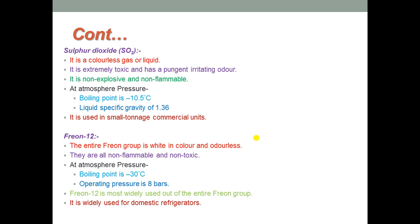Another type is Freon-22, designated R-22, with chemical formula CHClF₂ (Chlorodifluoromethane). It has similar properties to Freon-12 but a normal boiling point of around -40.8°C, making it a comparatively high pressure refrigerant. Freon-22 is employed in large capacity plants like packaged air conditioning units. It is also used for low and medium temperature refrigeration. From the year 2010, only recycled or saved stocks of Freon refrigerants can be used — it is no longer manufactured.